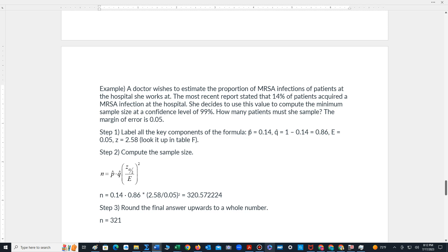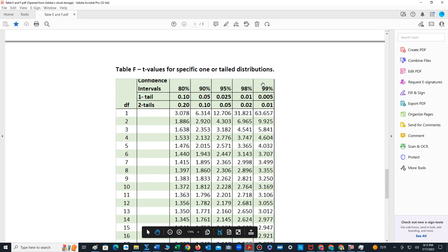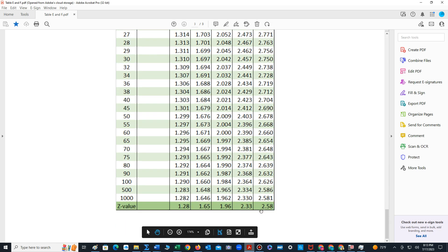So first of all we want to find P-hat. P-hat is given, that's 14%, 0.14. Q-hat is 1 minus 0.14, 0.86. E is the margin of error, that's 0.05. We're given 99% so we can look that up in table F and see that the Z-value is 2.58.